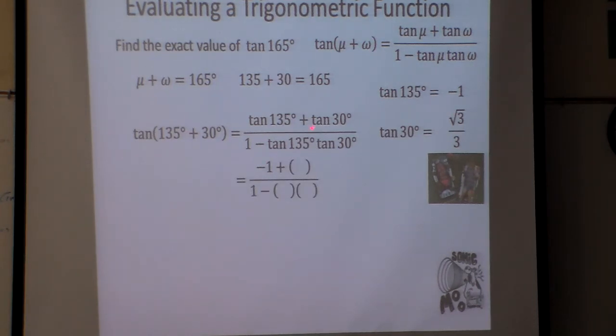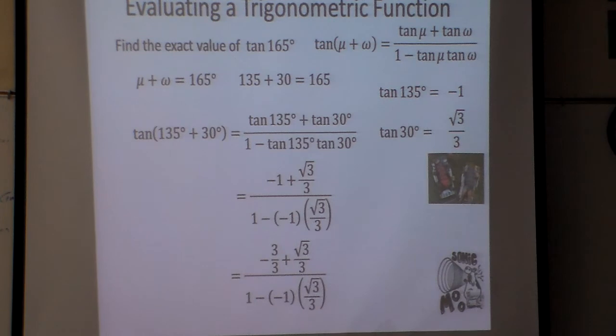So tangent 135 is negative 1. That 1's right there, it's common. This parenthesis right here is going to become that square root of 3 over 3. That parenthesis is going to be negative 1, and that parenthesis right there is going to be square root of 3 over 3.